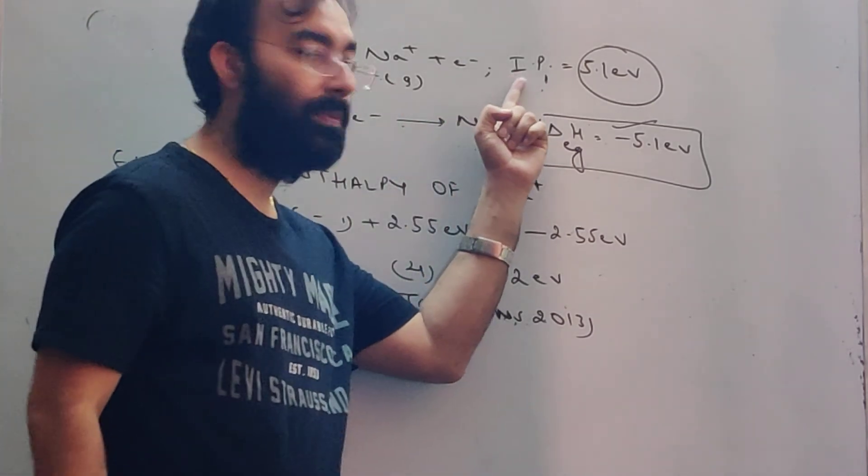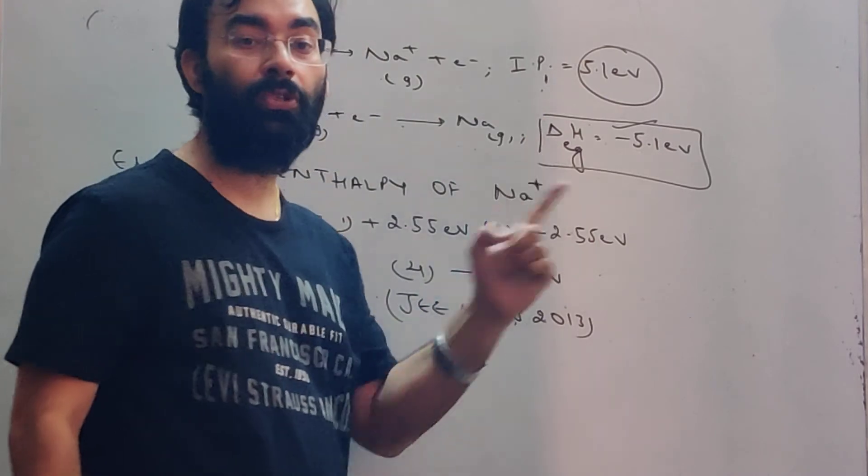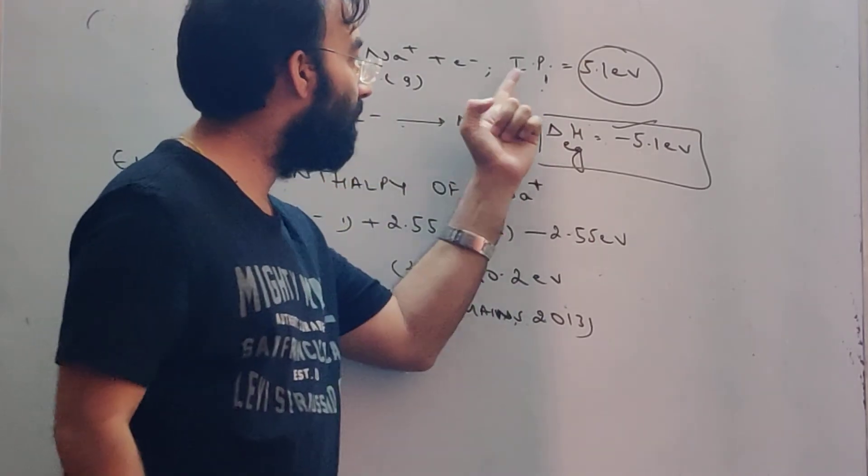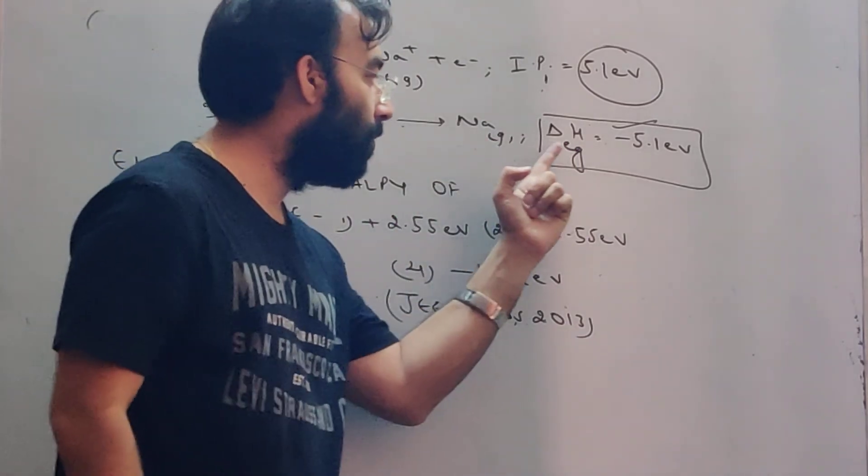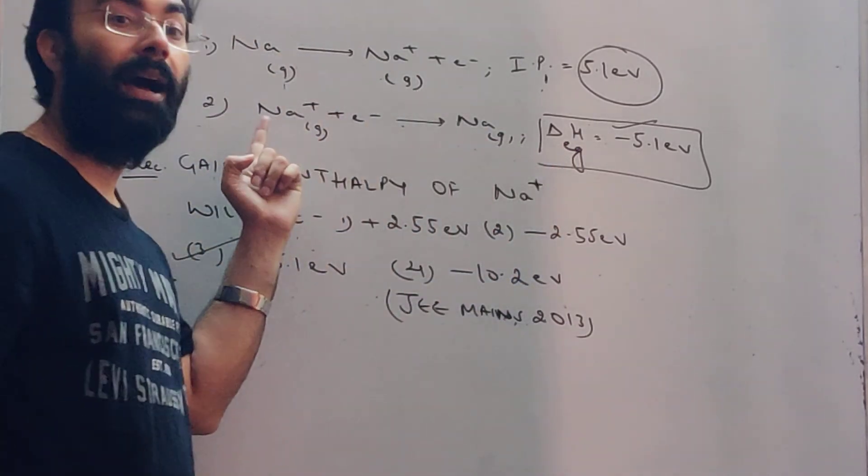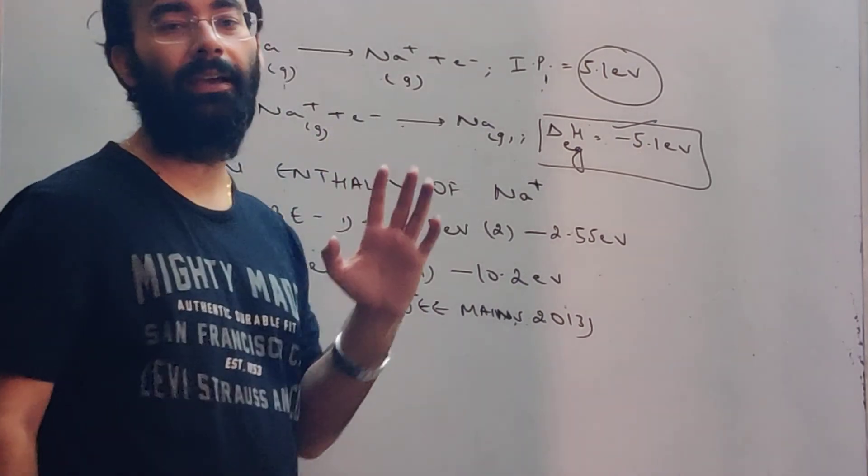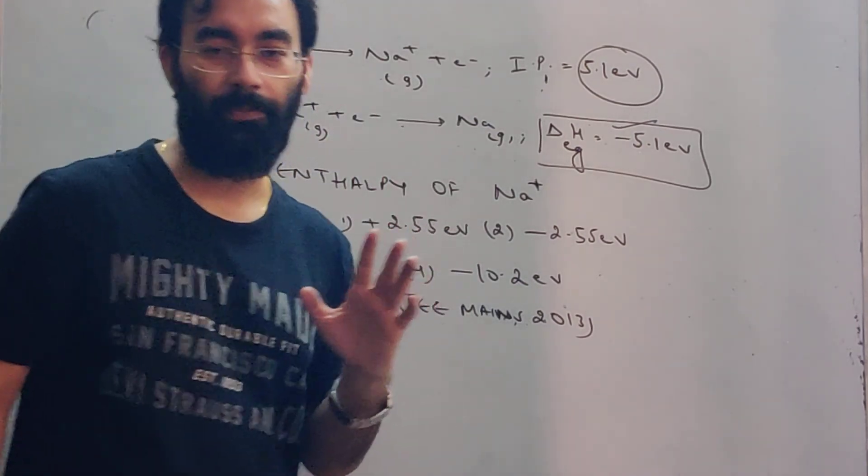So here we understand the relationship between ionization potential and electron gain enthalpy. The ionization potential of sodium causes electron loss, and electron gain enthalpy is the reverse. Thank you.